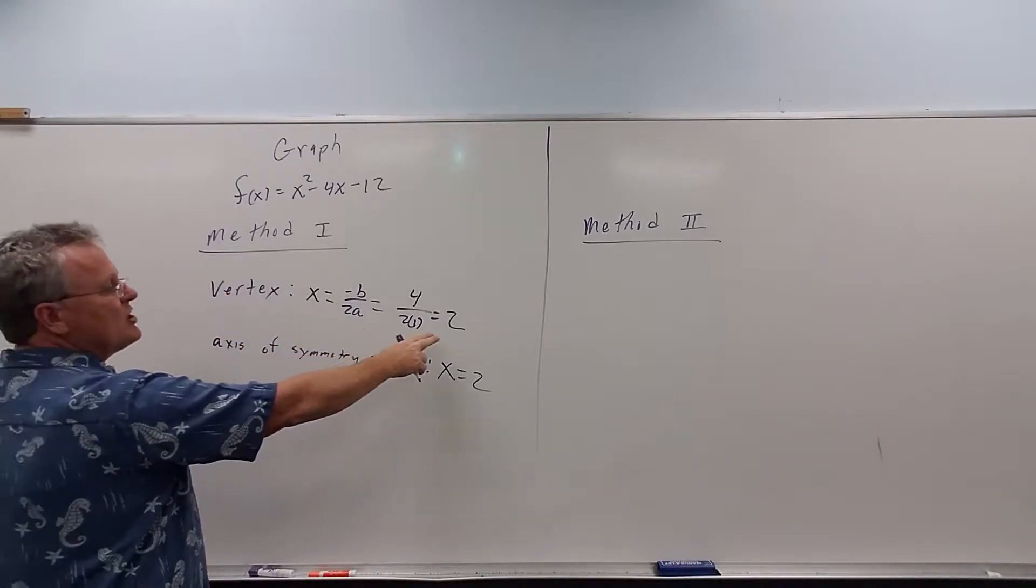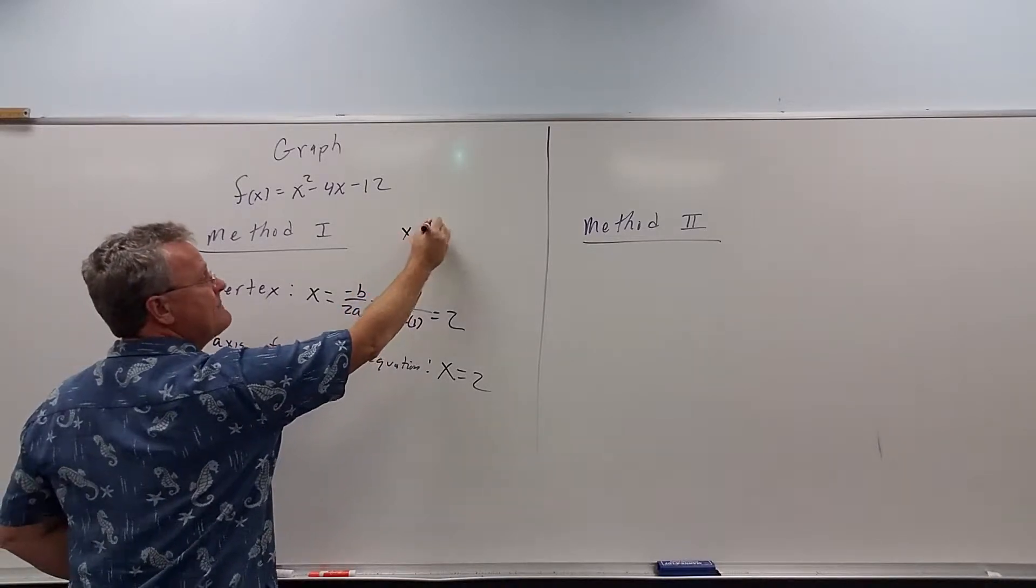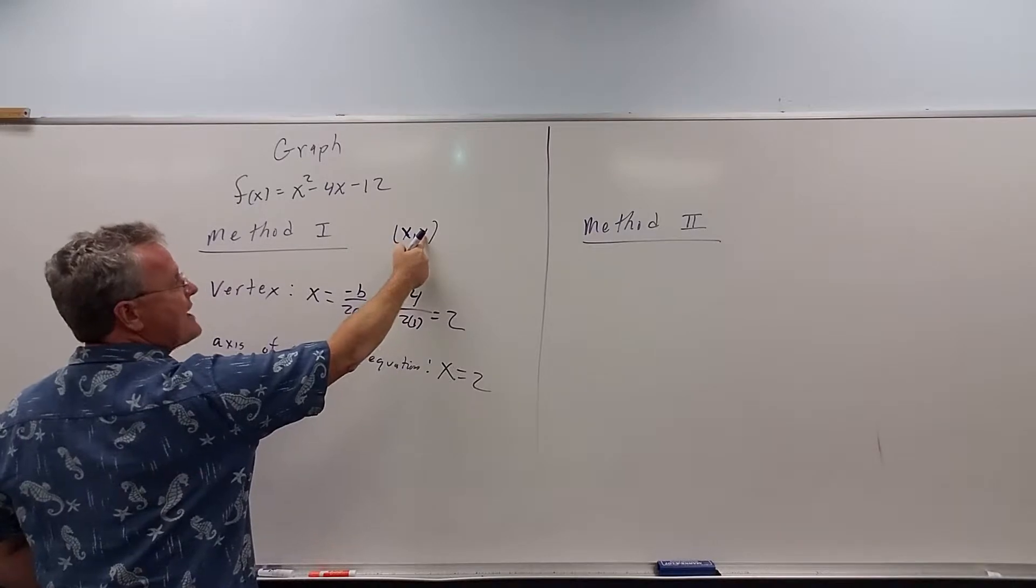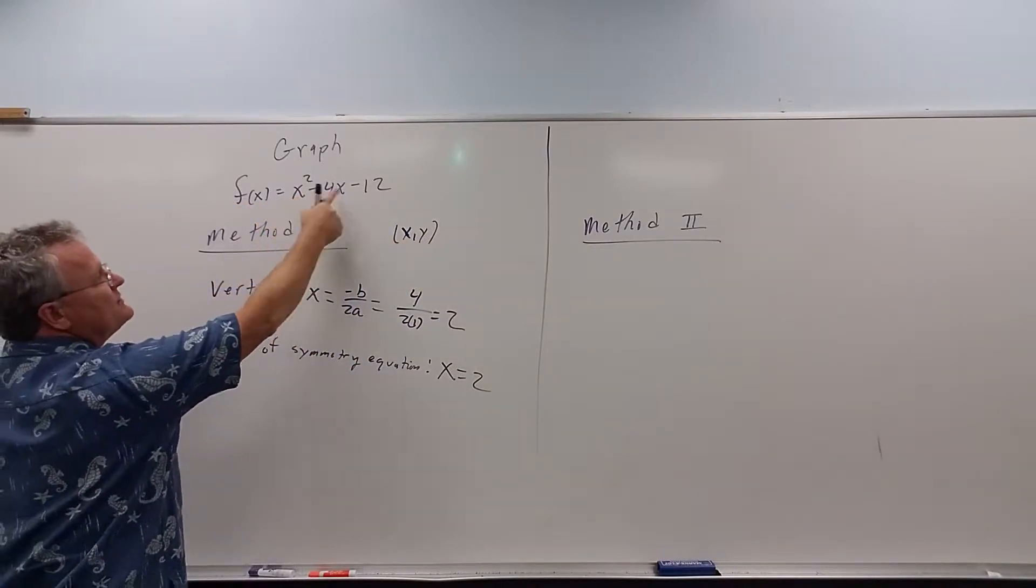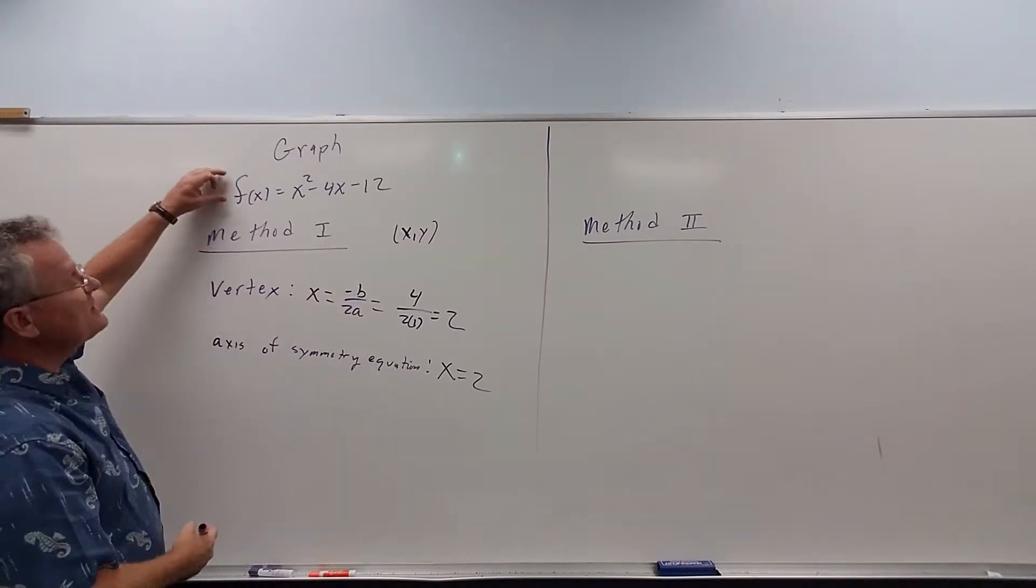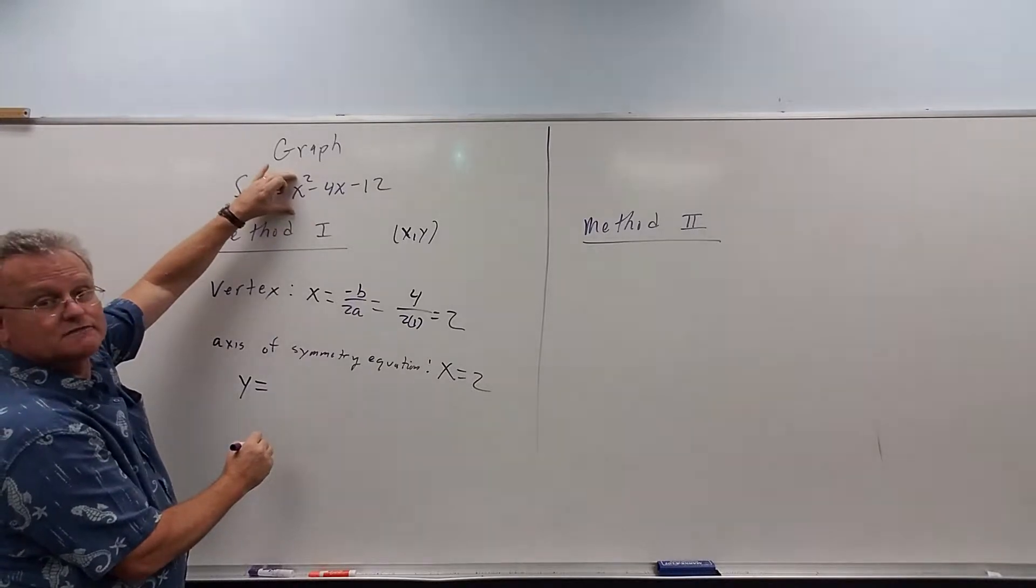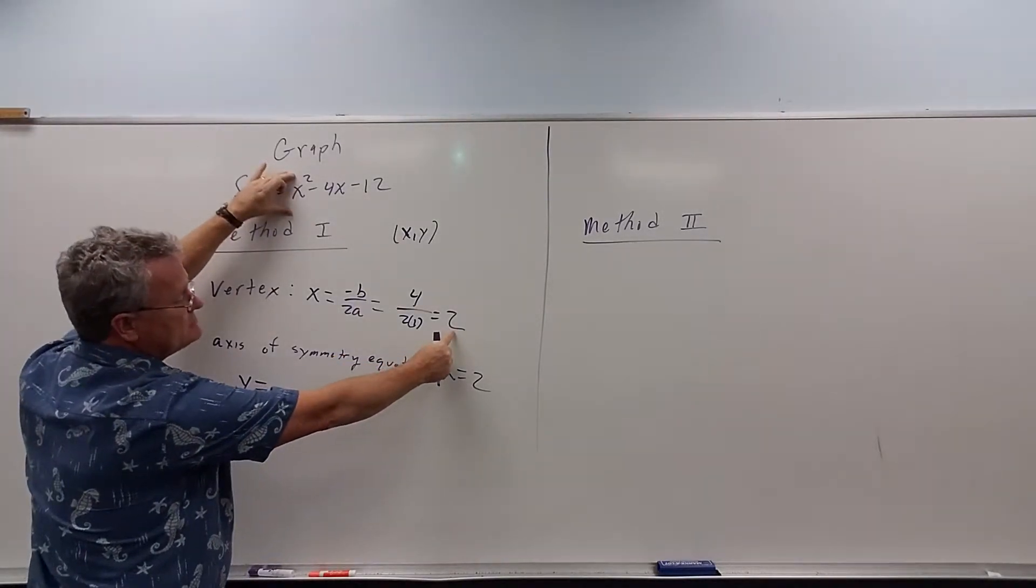Now, next thing we need to know before we want to plot the vertex. The vertex is a point (x, y). We know what x is. We need to figure out y. Y is f of x. So I just plug the x value in here to find y. So instead of writing f of x, I want to write y equals x squared minus 4x minus 12. But for x, I'm plugging in 2.